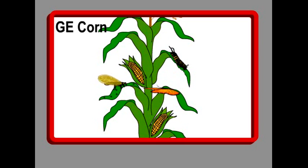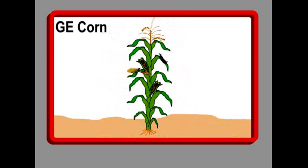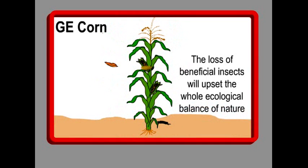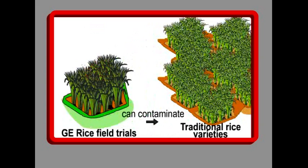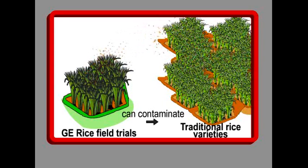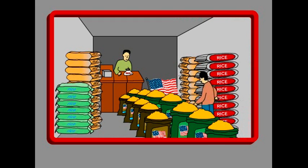Beneficial insects, like the lacewing, that eat crop pests were found to die faster after feeding on pests that had eaten GE corn leaves. GE crops will also contaminate precious local crop varieties, destroying them forever. This process is irreversible. This happened in Mexico, which is the center of biodiversity of corn. GE rice field trials are thus very dangerous.